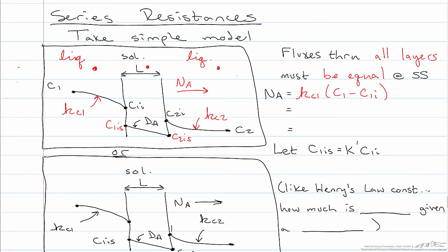Similarly, the flux in the liquid phase on the permeate side is proportional to, with a proportionality constant of Kc2, the concentration on the permeate side at the surface minus the concentration in the bulk at the permeate side.